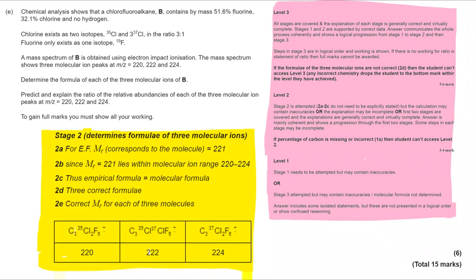It's then determining the formulae of the three molecular ions. Well for this we need to think about the fact that the only difference really is whether we have chlorine-35 or chlorine-37. So in the 220 that will be two 35 chlorines. In the 224 that will be two chlorine-37s and in the 222 that will be chlorine-35 and a chlorine-37.